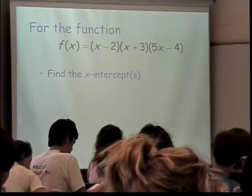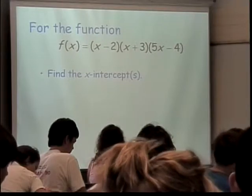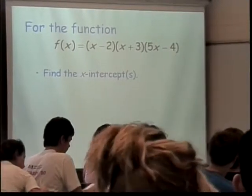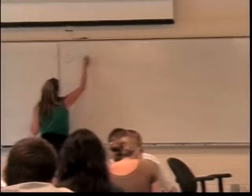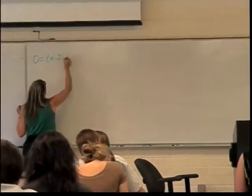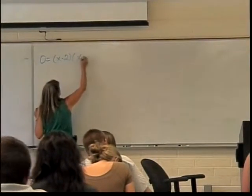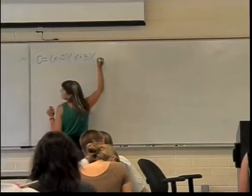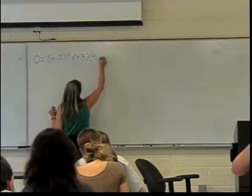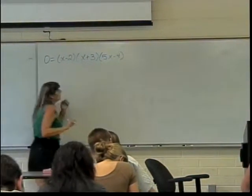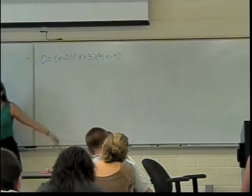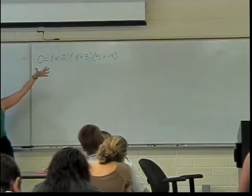If you start partway through the process, those things will not work for every function you get. So we'll have zero equals x minus two times x plus three times five x minus four. Now, based on the zero product principle, that means one of those things has to be zero.